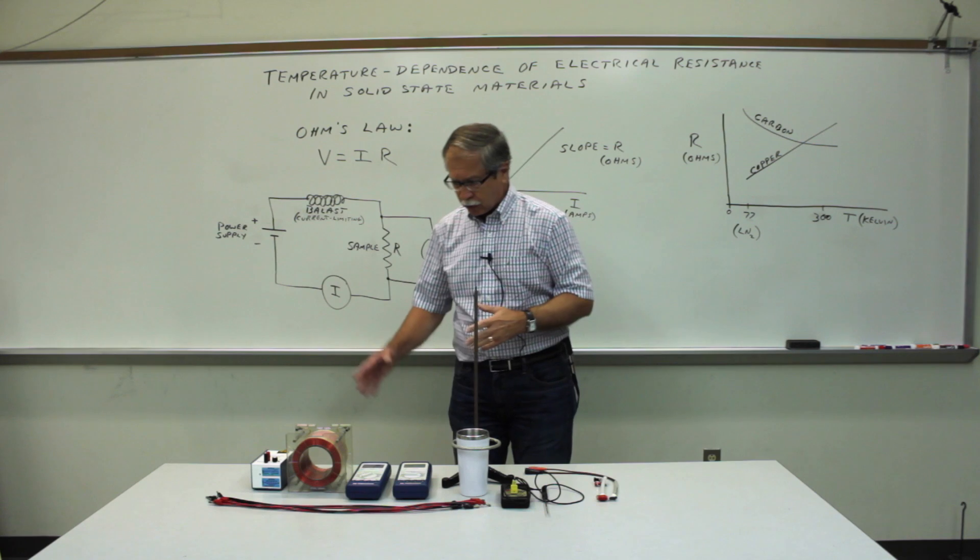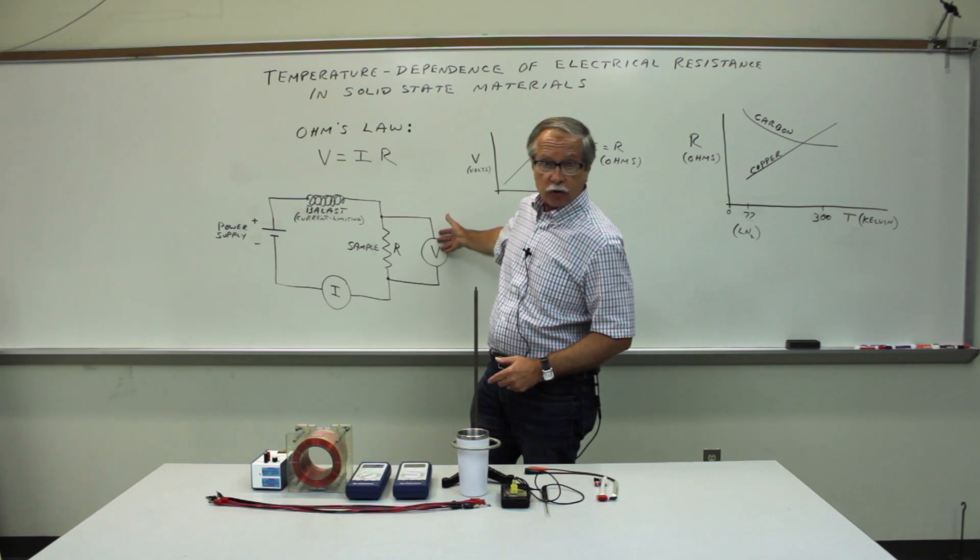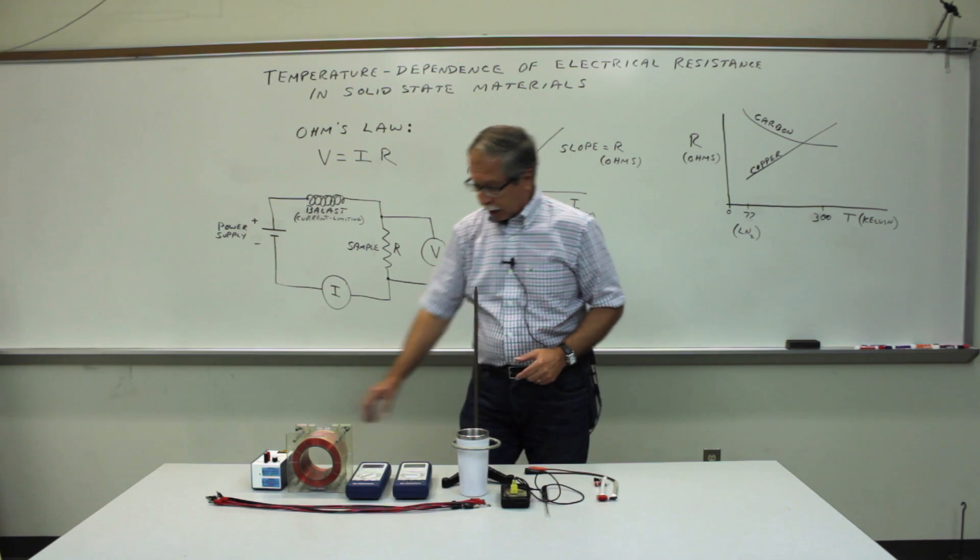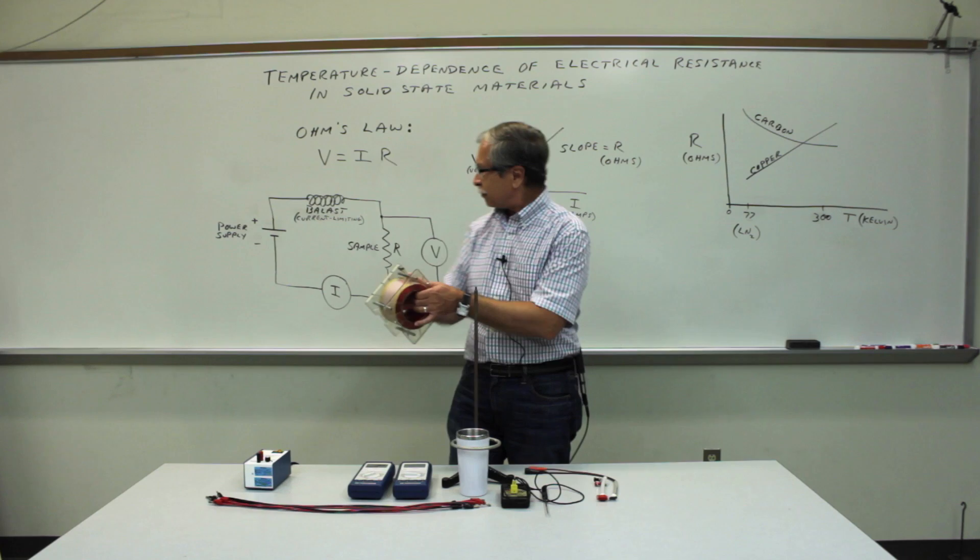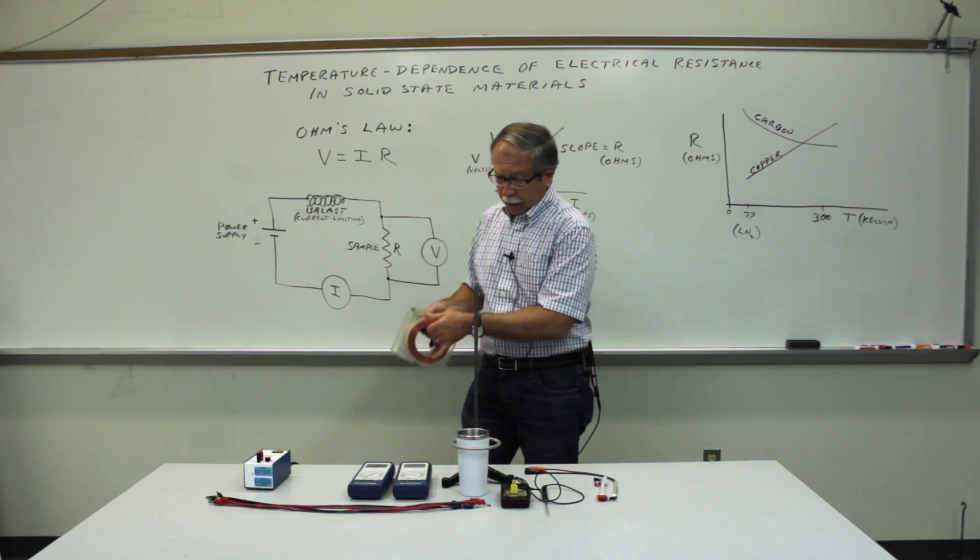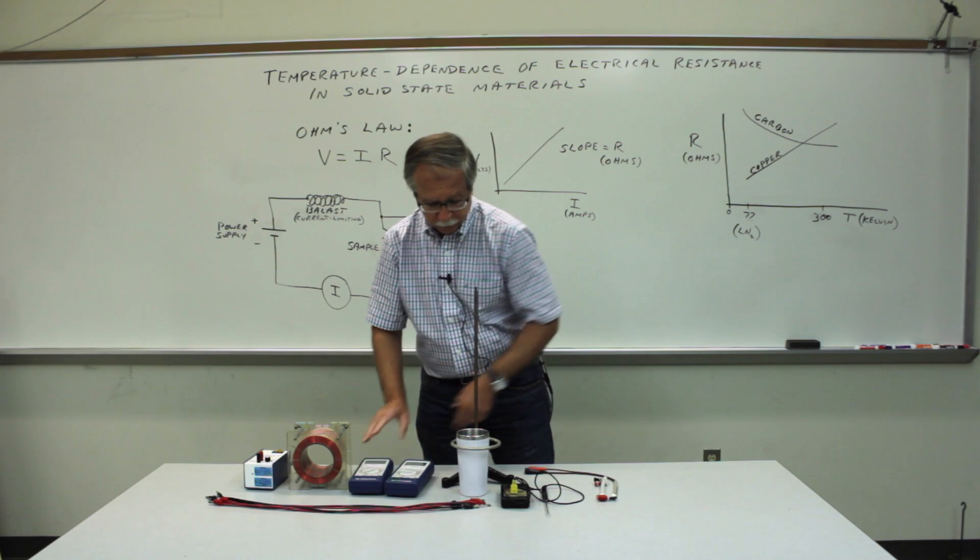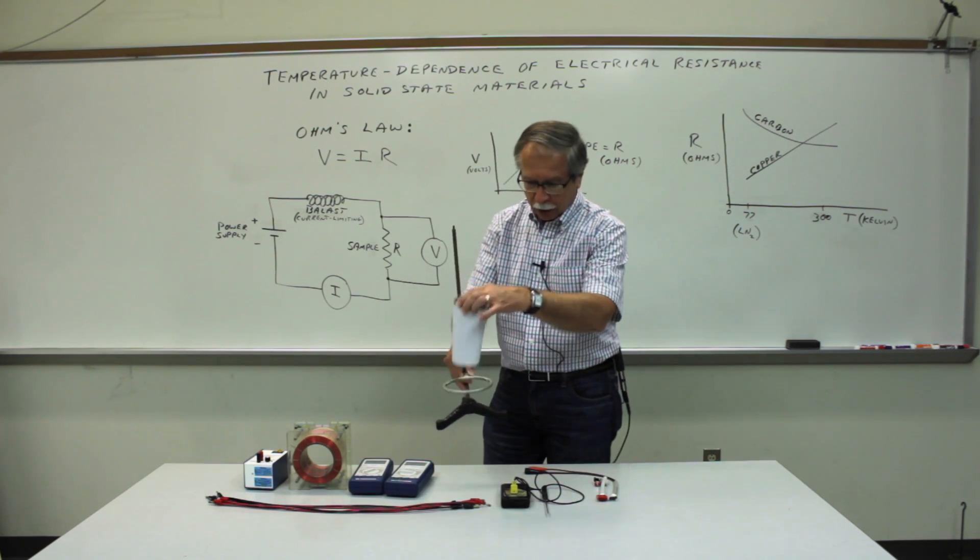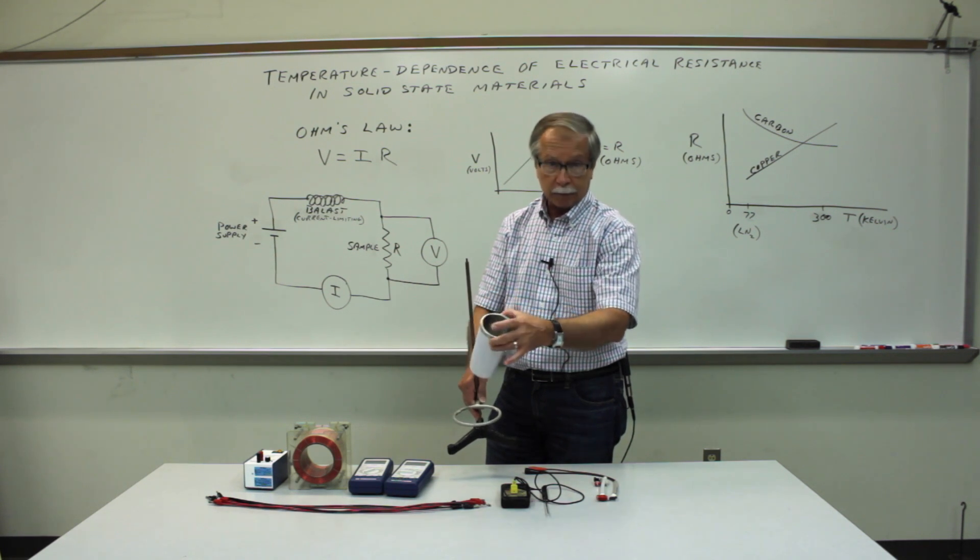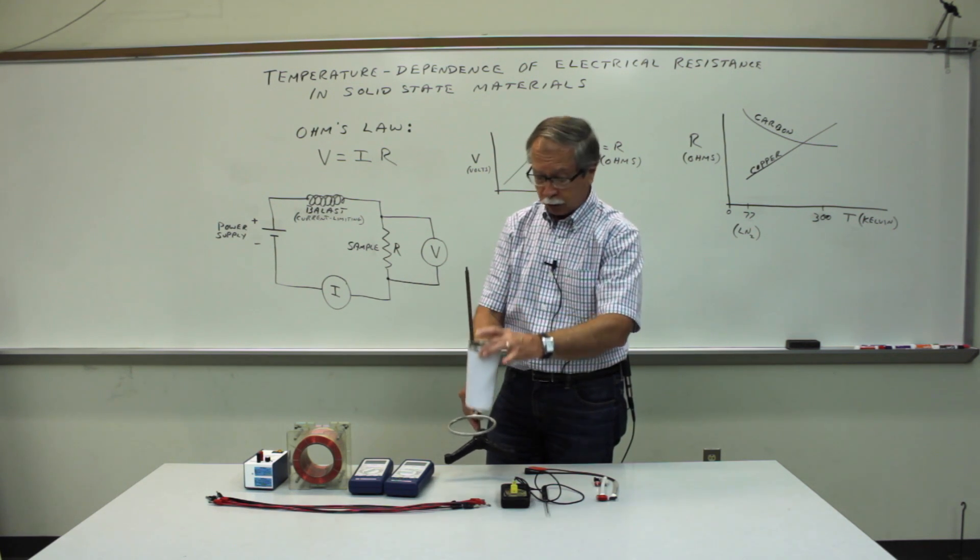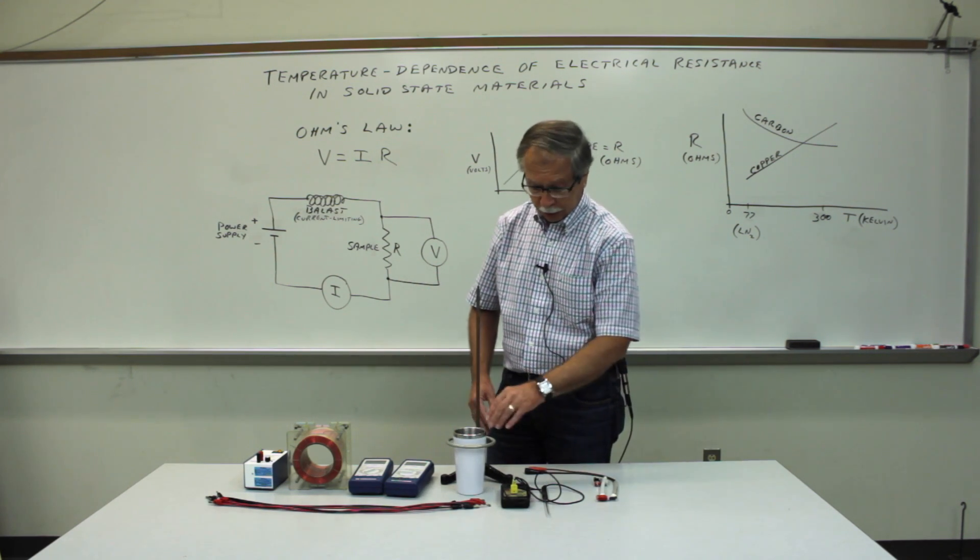Now, to accomplish this, we'll just wire up a circuit that looks like the one that's drawn here on the board. We have the power supply and the large ballast resistor, and a couple of meters for measuring the current and voltage. This container allows you to put the sample in different temperature baths, ice water, hot water, liquid nitrogen, and the ring stand is simply to protect you from accidental spilling.